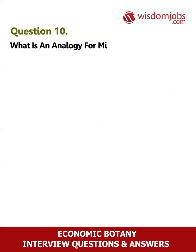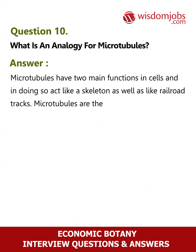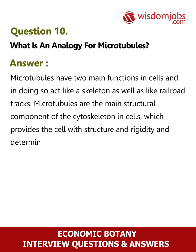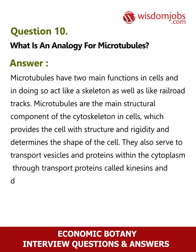Question 10: What is an analogy for microtubules? Answer: Microtubules have two main functions in cells — they act like a skeleton as well as like railroad tracks. Microtubules are the main structural component of the cytoskeleton, providing the cell with structure and rigidity and determining the shape of the cell. They also serve to transport vesicles and proteins within the cytoplasm through transport proteins called kinesins and dyneins, which act much like railroad cars.